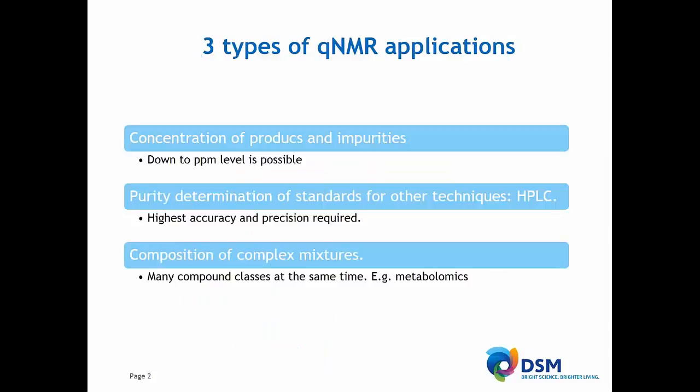There are basically three types of applications for QNMR. First, the concentration of products and impurities — measuring just the compound you can already see down to PPM level how much is in there of other compounds. You can do an impurity determination of standards for other techniques like HPLC. And the nice thing about NMR is that it is accurate and you can get high precision, and with a simple proton NMR you can see a lot of the compounds that are present. Last but not least, the composition of complex mixtures has increased a lot in the last decade, and a lot of companies are working on that.